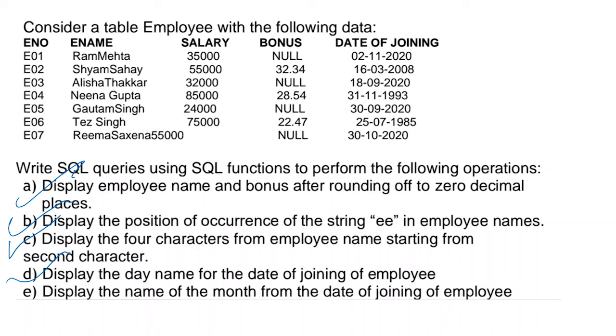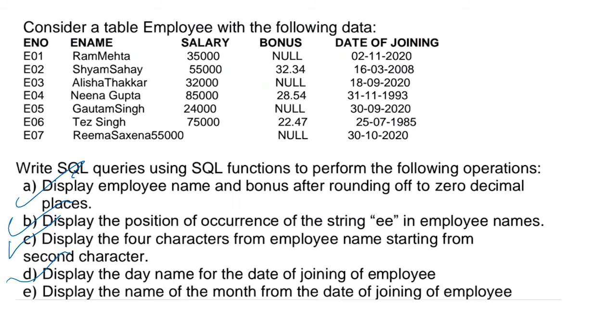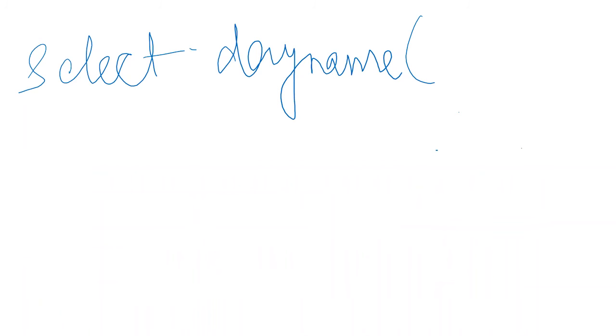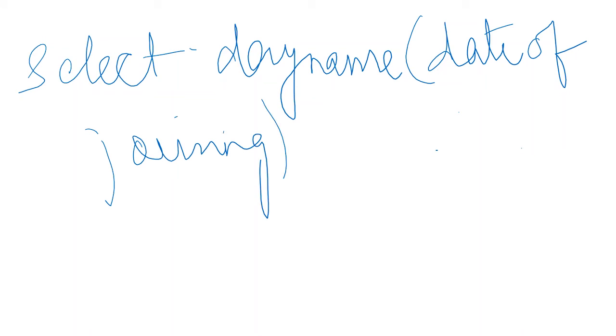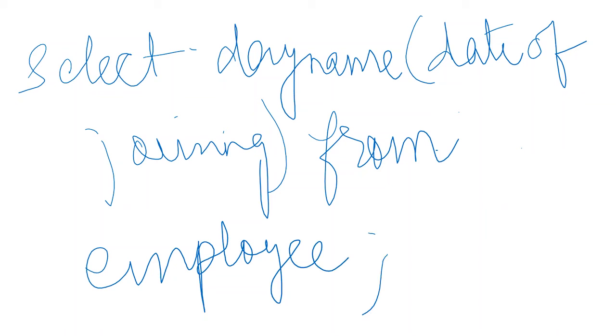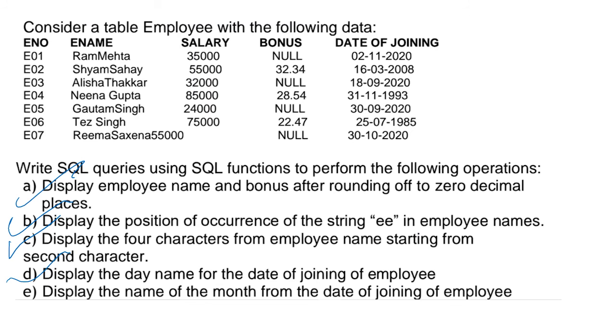The fourth question under the employee table is: display the day name for the date of joining of employees. This is again a very simple question. So we'll write: SELECT DAYNAME(date_of_joining) FROM employee. This will give you the day name on which the employee joined the institution.